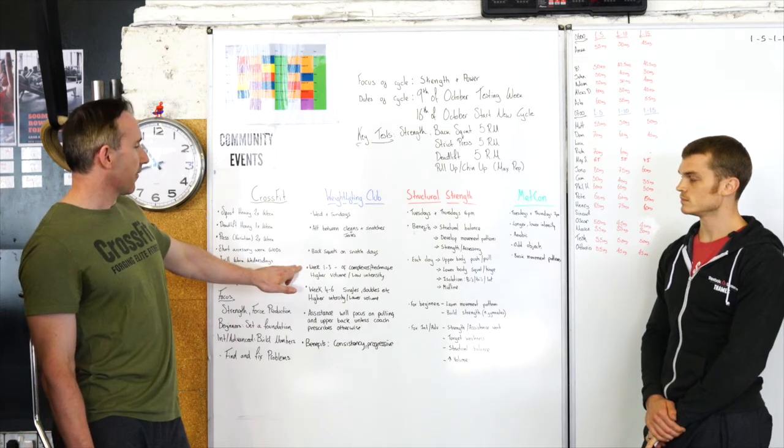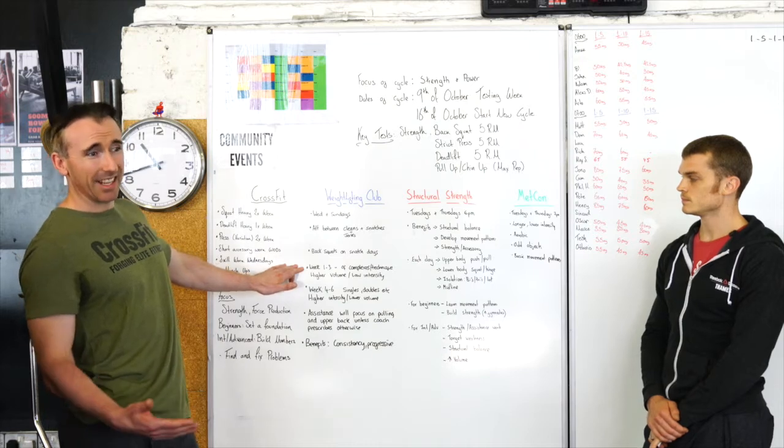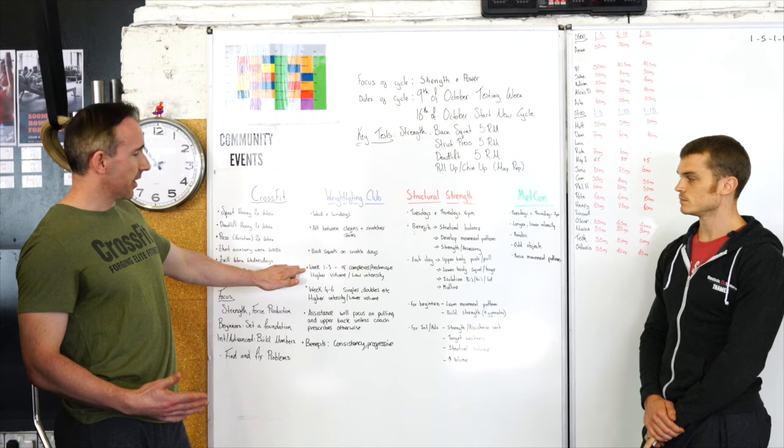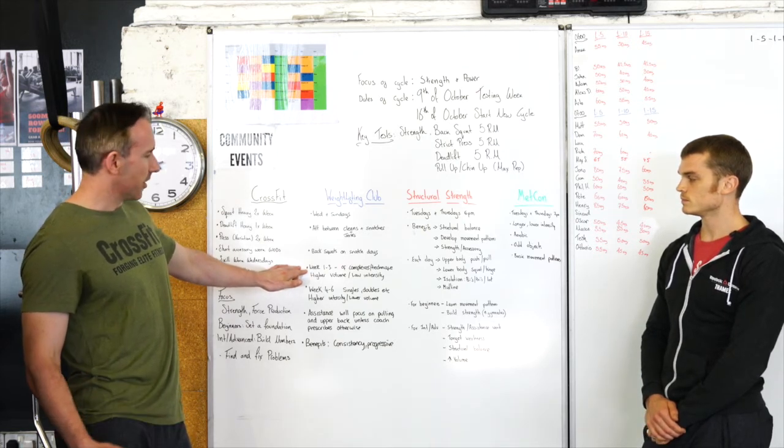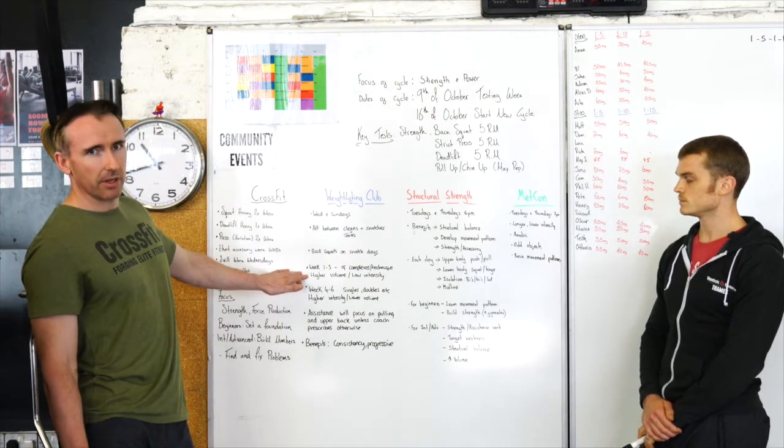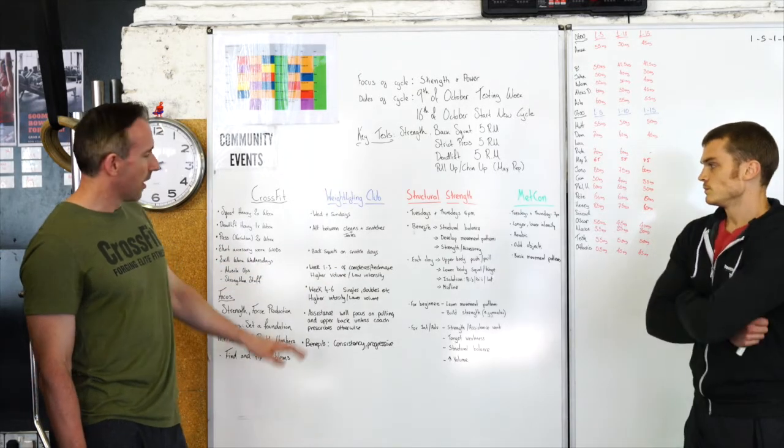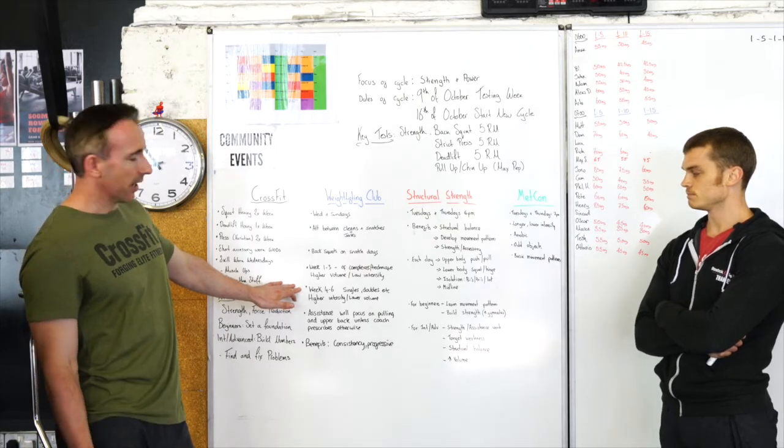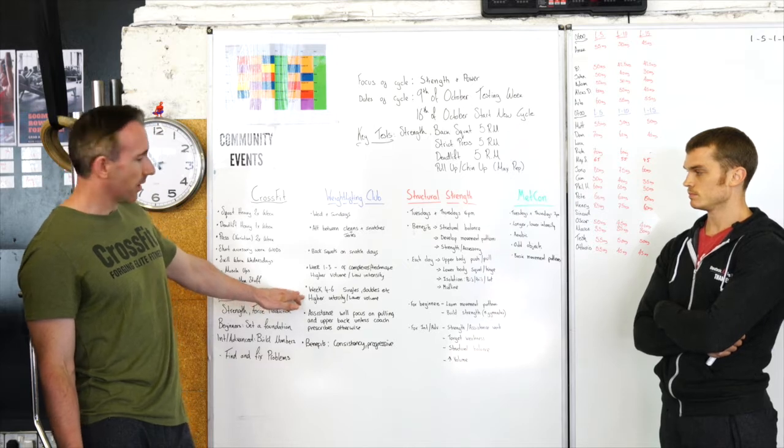Generally week one to three is going to be made up of complexes, more technique work. So for the beginners, it's a good time to nail down that technique, get familiar with the movement. And obviously those of you who are a little bit better, again we can always get better on those positions. Generally it's going to be higher volume to get the reps in, somewhere generally between about 70 to 80%. The intensity is going to be quite low, but obviously as we progress to week four to week six, we're going to start going down to singles, doubles, and obviously the weights are going to increase and the volume is going to go down.